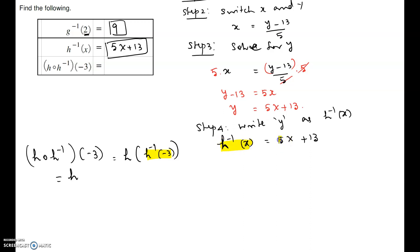We have h inverse of x equal to 5x plus 13. In this, x must be changed to negative 3 the input. So it is 5 times negative 3 plus 13. We get h at negative 15 plus 13, that is h at negative 2.